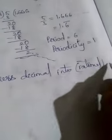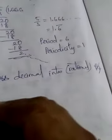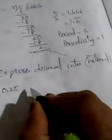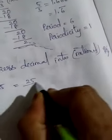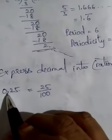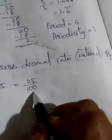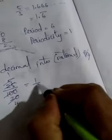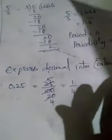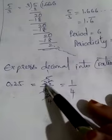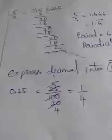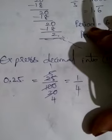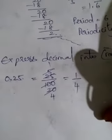Now we come to expressing a decimal into rational P by Q form. For example, 0.25 — this is a terminating decimal, no bar. We write 25 by 100 because there are 2 digits after the decimal point, so the denominator is 100. After cancellation, 25 by 100 simplifies to 1 by 4. However many digits are after the decimal point, that many zeros go in the denominator, then simplify.